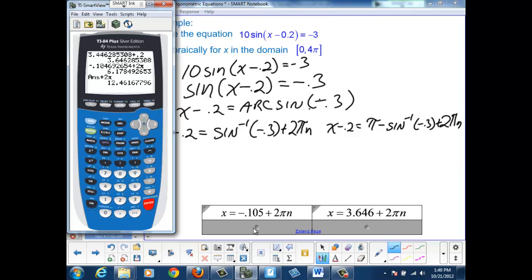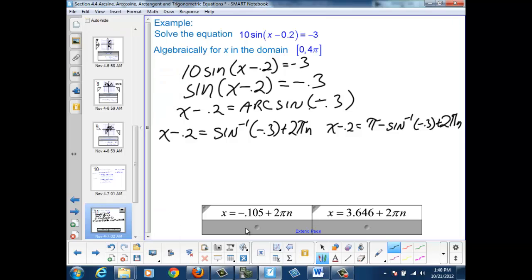Adding another 2π, letting n = 3, would take us outside of our restricted domain. So for the left side of our two-part solution, we have the values 6.178 and 12.462.